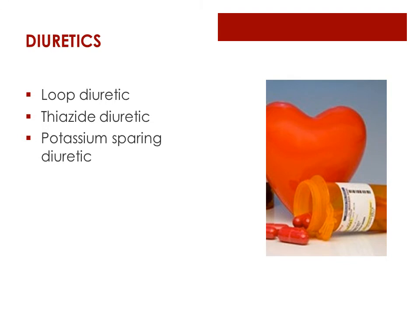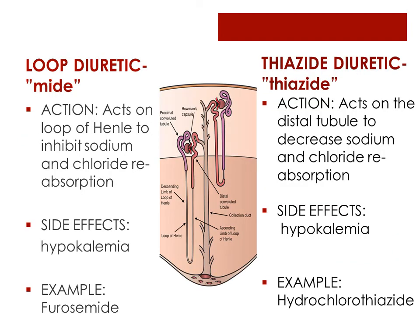Remember that blood volume helps regulate blood pressure. Many times diuretics, or water pills, may be given to encourage the kidneys to excrete fluid. Less fluid in the body creates less blood volume and thus less pressure in the blood vessels. The three types of diuretics we're going to discuss are loop diuretics, thiazide diuretics, and potassium-sparing diuretics. When reviewing diuretics, we must always assess blood pressure, intake and output, and electrolyte imbalances.